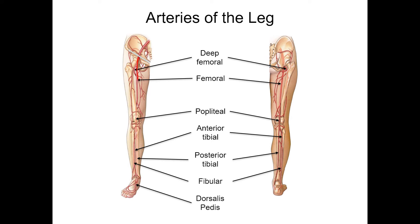Starting with the femoral, we have a branch diving deep — the deep femoral. Coming down behind the knee is the popliteal, branching out in front is the anterior tibial, behind the tibia is the posterior tibial, and behind the fibula is the fibular. We have an artery coming across the top of the foot called the dorsalis pedis. If we take a look at the right side of the picture, we can see these branches a little better.